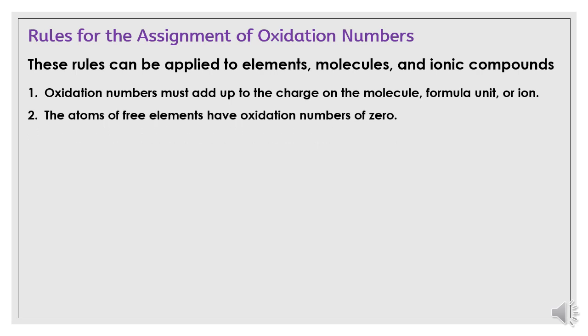Rule number two: the atoms of free elements have oxidation number of zero. Metals in groups 1A, 2A, and aluminum have +1, +2, and +3 oxidation numbers respectively.